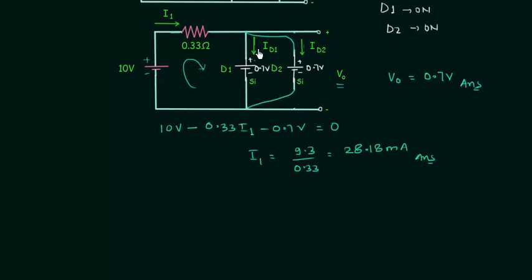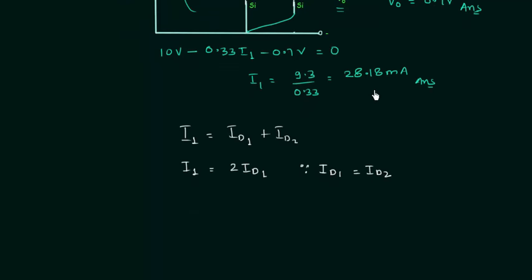I1 is the entering current. ID1 and ID2 are the leaving currents. So we have I1 equal to ID1 plus ID2. ID1 and ID2 are same. So I can write I1 equal to twice of ID1 since ID1 is equal to ID2. We have already calculated value of I1. It is 28.18mA.